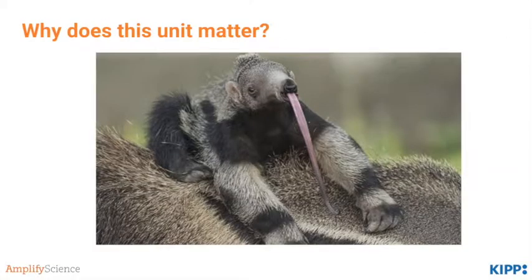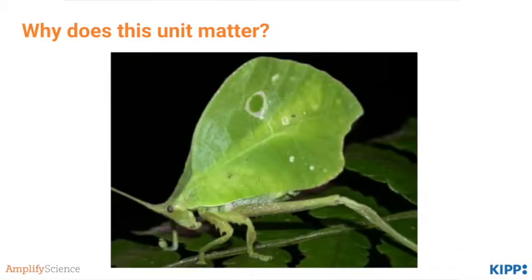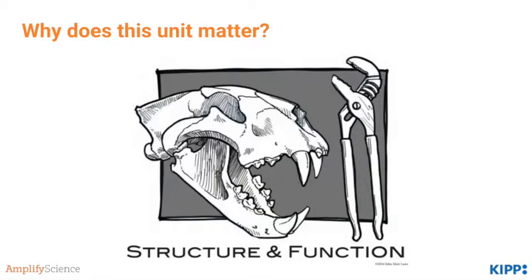This unit is important because it helps students start to understand why animals and plants look the way they do and behave the way they do in their environments — like this anteater here. Why does it have such a long, crazy tongue? Or this insect here, why does it have what looks like a leaf or a wing? Students are going to begin to understand the idea of structure and function and the connectedness between the two.